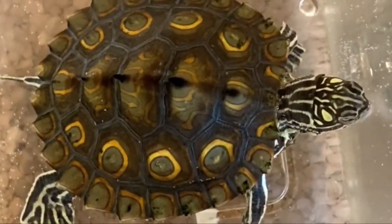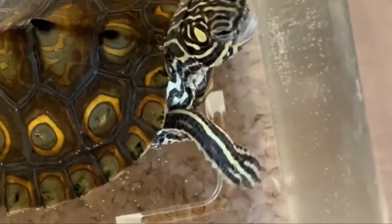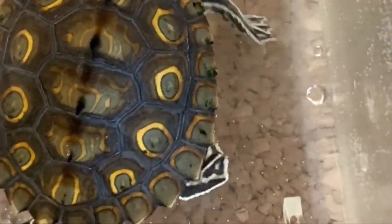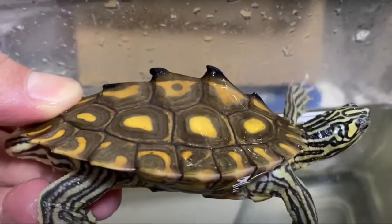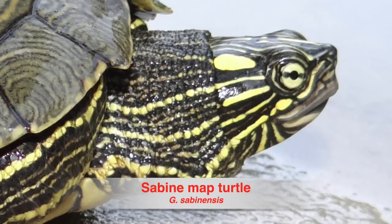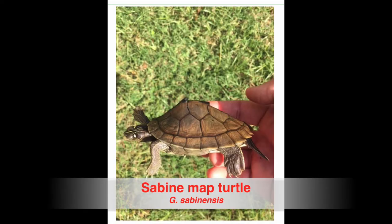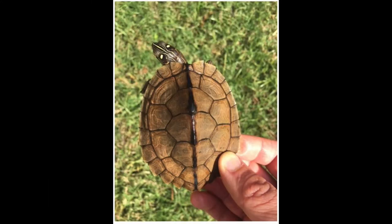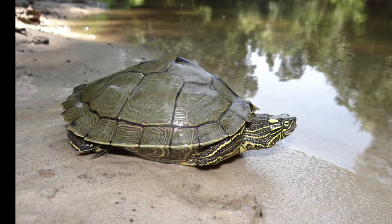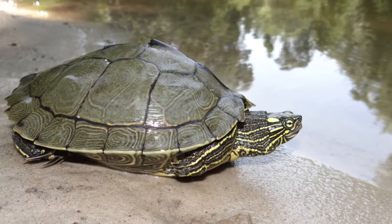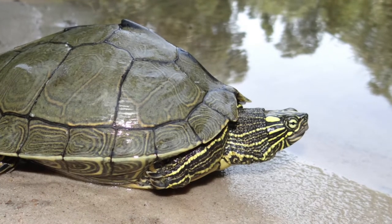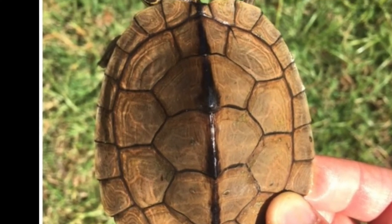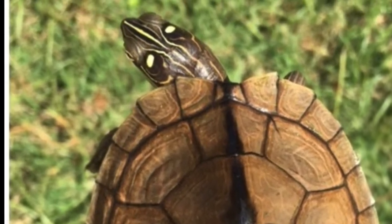And finally we have the narrow headed map turtles, also referred to as the sawback map turtles — a name given for the extreme serrated high keels on younger animals and males of the species. Females of this group also have small heads like the males. The Sabine map turtle is very similar to the Ouachita map turtle, but Sabines are smaller, have a smaller head even in females, a much higher dome shaped carapace, and noticeably smaller orbital markings behind the eyes.